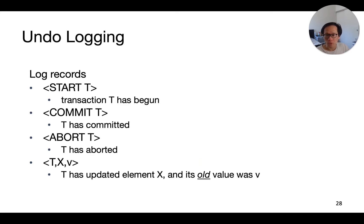There are four types of log records in an Undo Log: Start, Commit, or Abort of a transaction, and finally an Update Record which states that transaction T wants to update data element X.